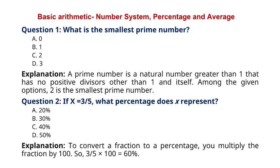Question 2. If X is equal to 3 divided by 5, what percentage does X represent? A. 20%, B. 30%, C. 40%, D. 50%. Explanation: To convert a fraction to a percentage, you multiply the fraction by 100. So, 3 divided by 5 multiplied by 100 is equal to 60%. So the correct answer to question 2 is option B. 60%.